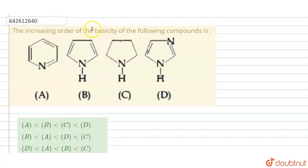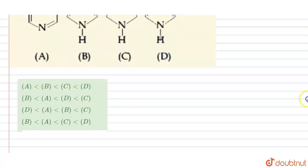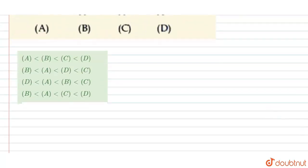Hello students. The question says that we need to find the increasing order of basicity of the following compounds. We have four compounds — A, B, C, and D — and we have to determine their increasing order of basicity.